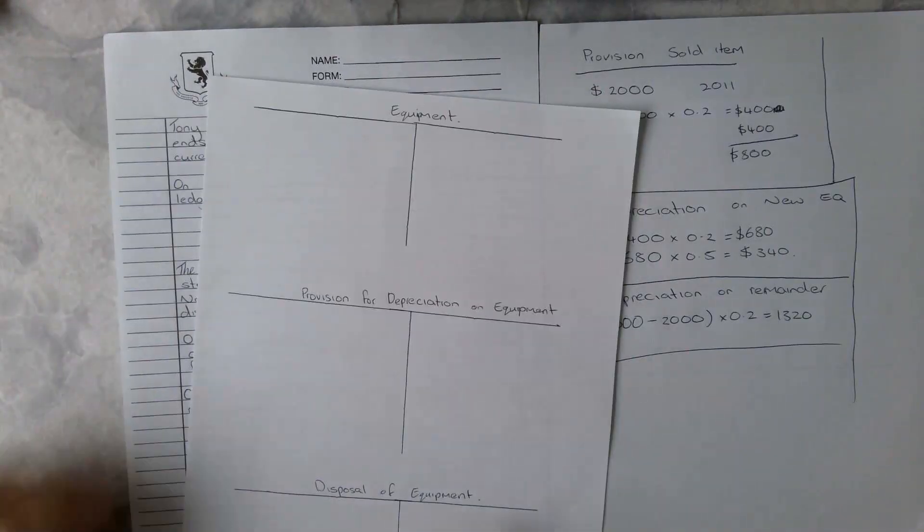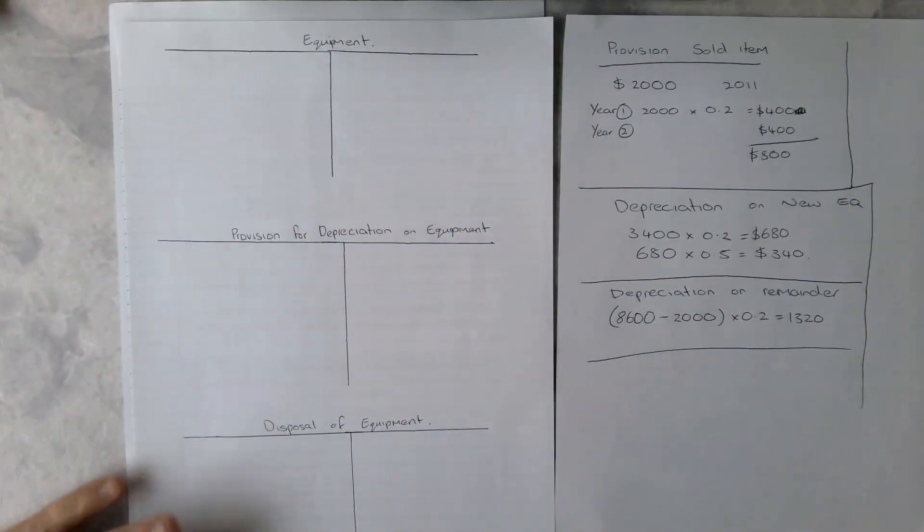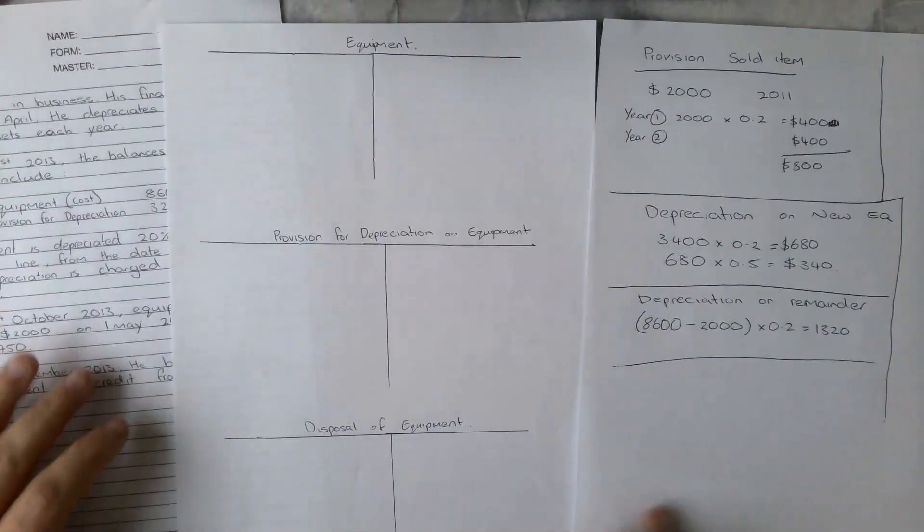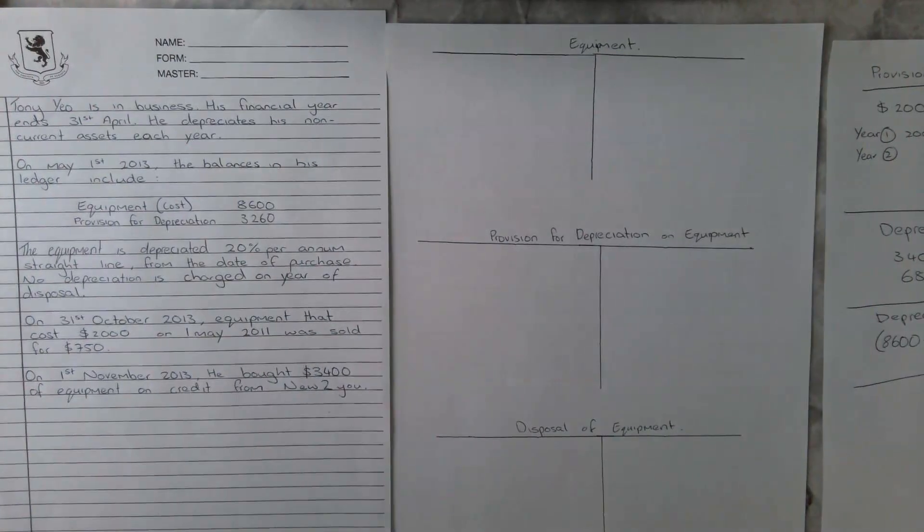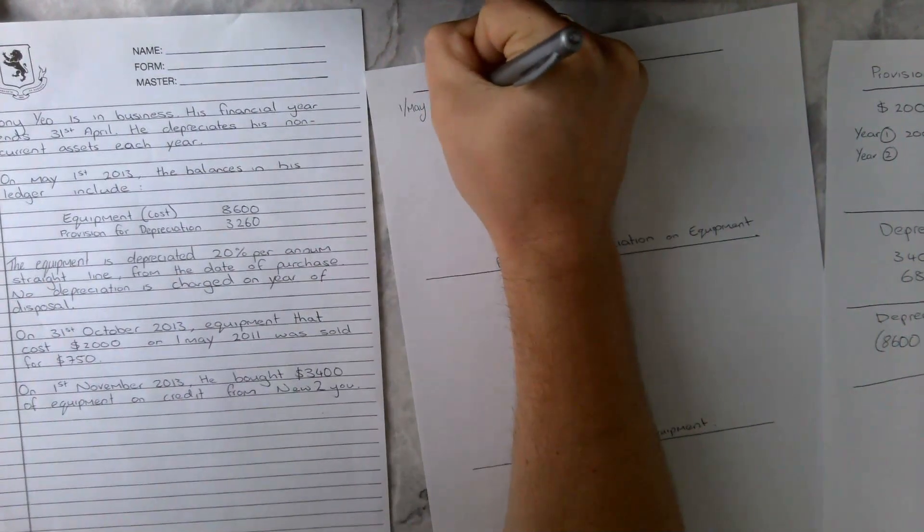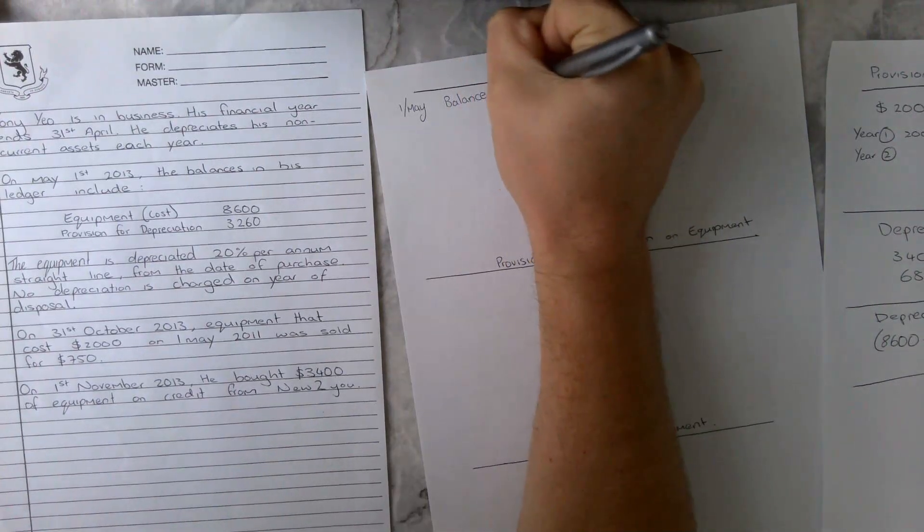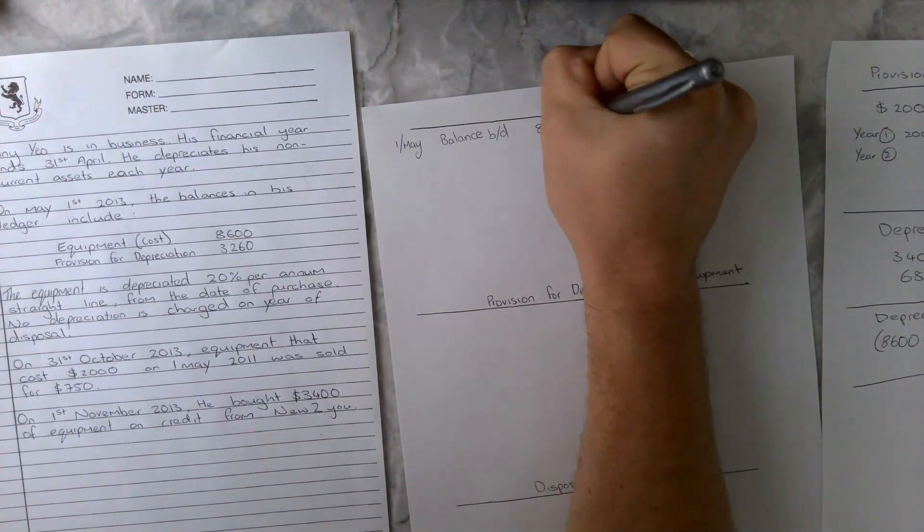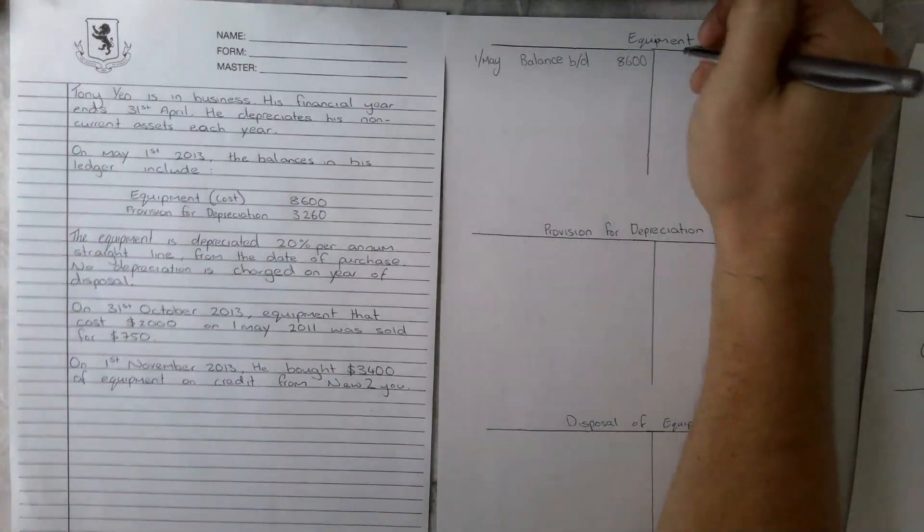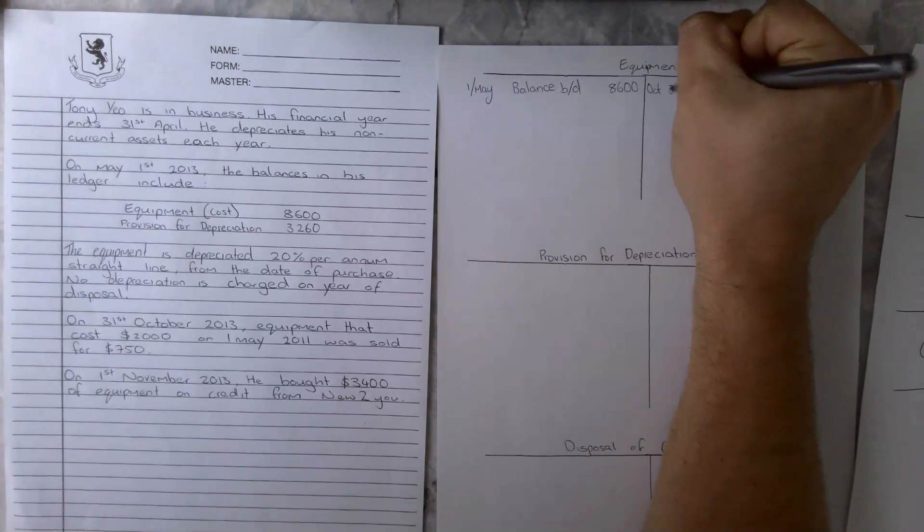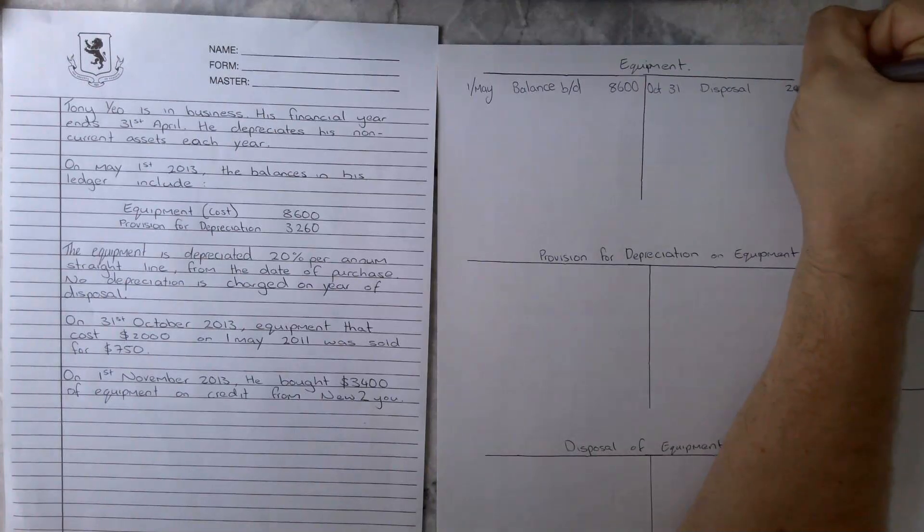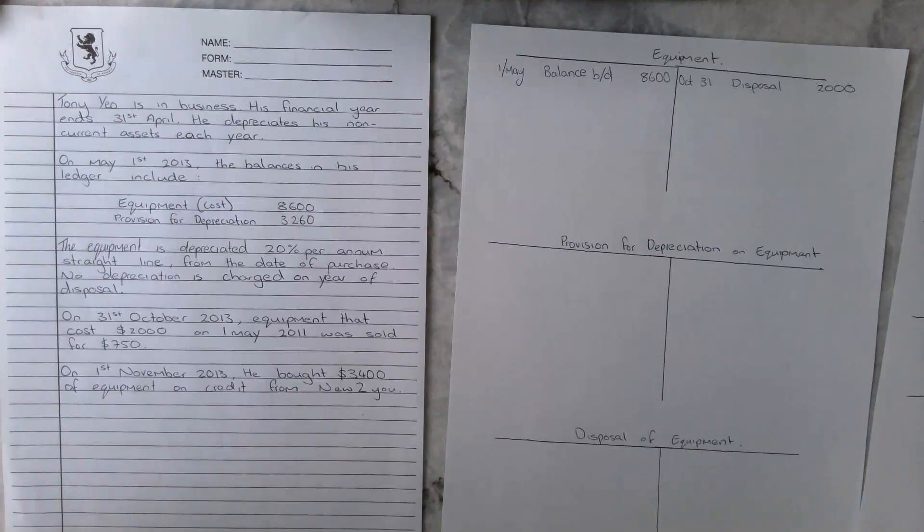The question actually asked to do these three accounts for the company. We want the equipment account, the provision for depreciation account on equipment, and the disposal for equipment account. First of all, we're going to start off with the equipment account because that is probably the easiest one to do. At the top, we are going to write our balance from the 1st of May, and that's going to be the one that is brought down from the year before, which we know is $8,600. What we do know is on October 31st we disposed, and that's going to be $2,000 because that is the historical cost of the disposal.